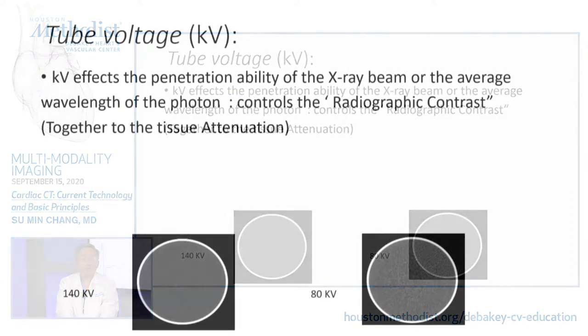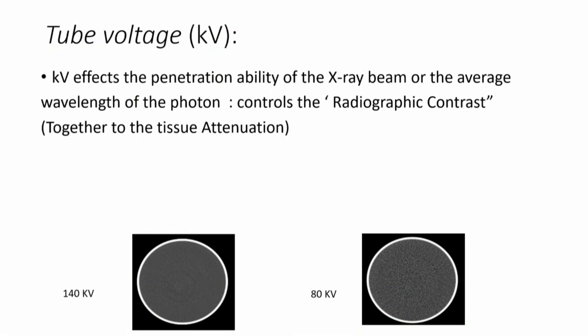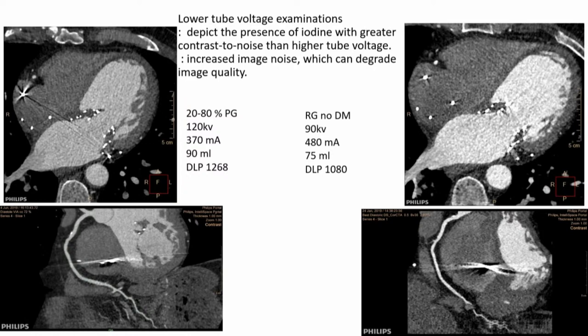Tube voltage is essentially the average effect of the penetration ability of all the X-ray beams generated. KVP is the peak energy — the highest energy applied to the tube — and the resulting average is called tube voltage. This controls overall image quality and radiographic contrast. Together with tissue attenuation characteristics, you end up with the attenuation coefficient and the image quality in terms of contrast and noise. At 140 kV everything looks more homogeneous, while at 80 kV there is much more attenuation and noisier imaging.